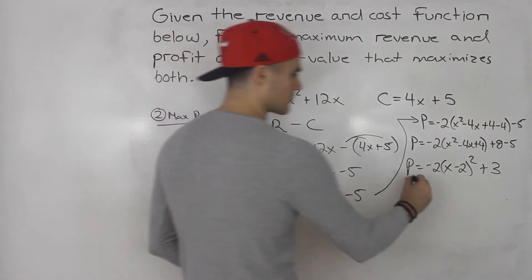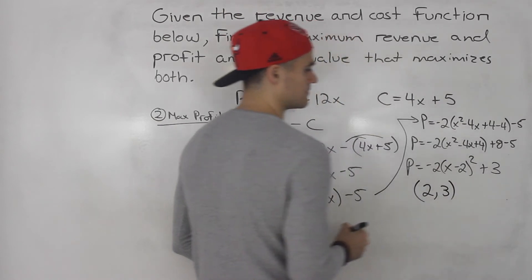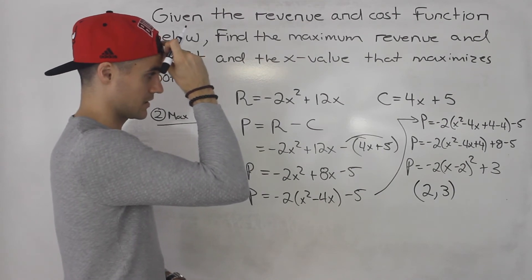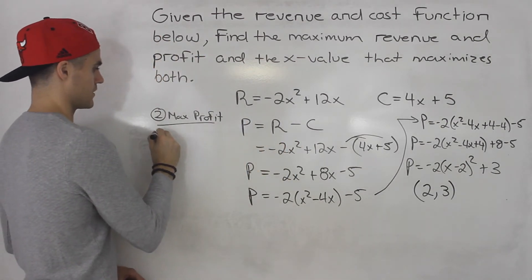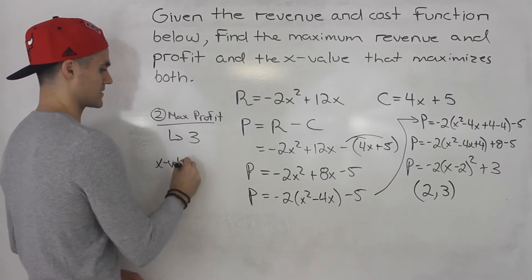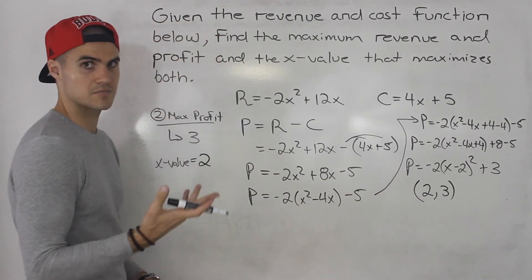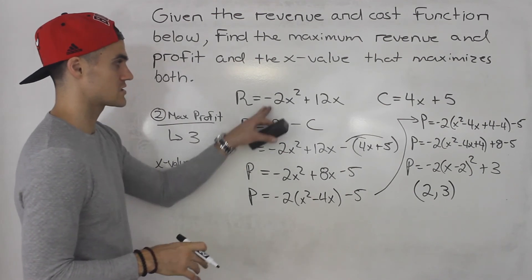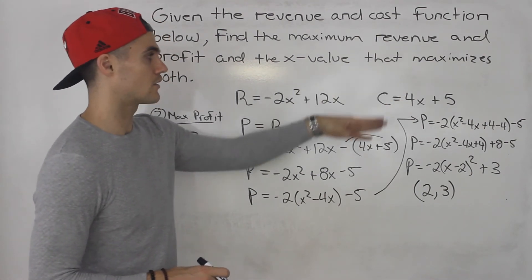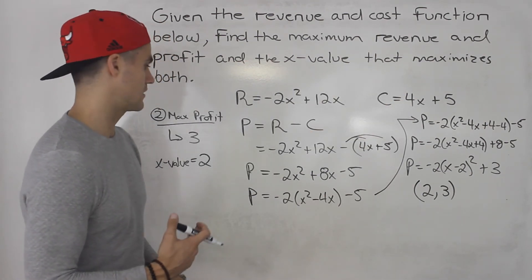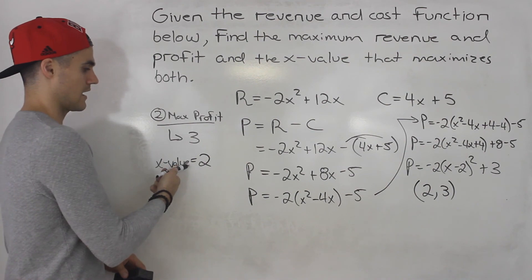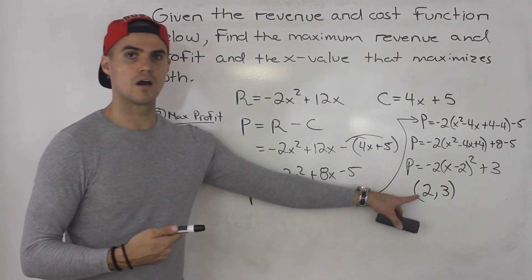Right, so the vertex for the profit function is 2 and 3. So we have a maximum profit of 3 and the x value that maximizes profit is 2. And notice that the x value that maximizes profit is different than the x value that maximizes just the revenue, because profit, we have to take into account the cost as well. There's another factor to take into account. So max profit is 3, and that happens at an x value of 2.